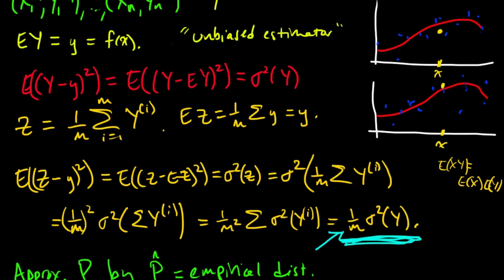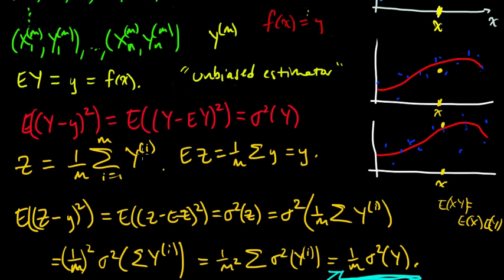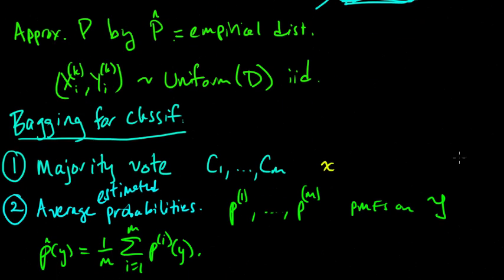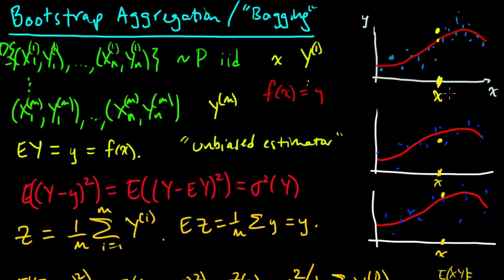And this looks a lot like in the regression case. Remember, in the regression case, we had these YIs, each of which we had a YI for each data set, and we averaged them to get our Z. And so if you think about each of those probabilities as one of these YIs, then Z is like the average estimated probability. So in fact, this is just in this case, averaging probabilities is just exactly like the regression case, except instead of a point X here, we have the different classes, Y.